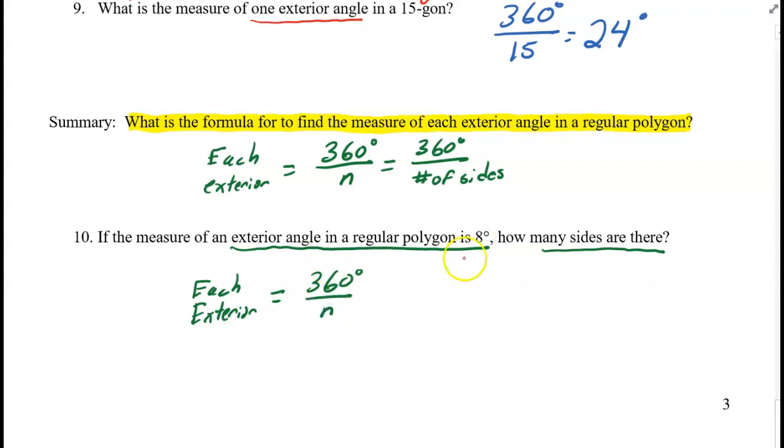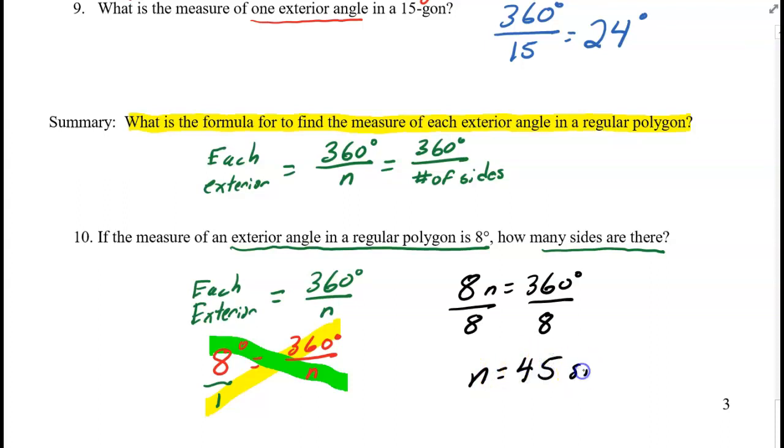So here, each exterior angle is 8 degrees. So that's 360 degrees over n. If I were to put this 8 over 1 and cross multiply, I'll get 8n is equal to 360 degrees. I could divide both sides by 8. And the number of sides, when I use my calculator, is 45. So this has 45 sides.